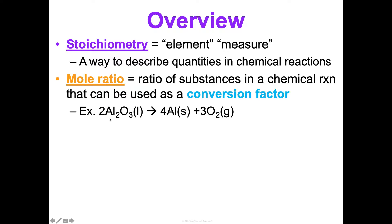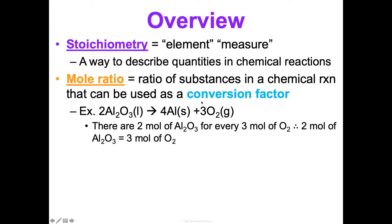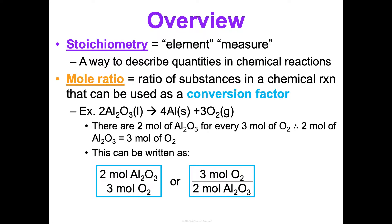For example, look at this balanced chemical reaction of the decomposition of aluminum oxide. You have two aluminum oxides decomposed into four moles of aluminum and three moles of oxygen gas. It has to be balanced in order to find the mole ratio. So what we can learn from this is there are two moles of aluminum oxide for every three moles of oxygen gas that are made. You can write that as a conversion factor: two moles of aluminum oxide is equal to three moles of oxygen gas.